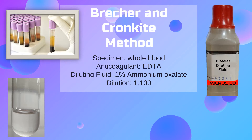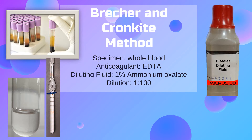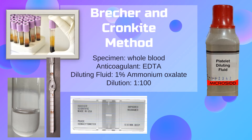Another way to achieve a 1:100 dilution is to use an RBC Thoma pipet — draw blood to the 1 mark, then draw diluting fluid to the 101 mark. After dilution, transfer the specimen to a hemocytometer and use a phase contrast microscope. The hemocytometer for phase contrast is thinner with a flat bottom to fit the phase contrast microscope better.